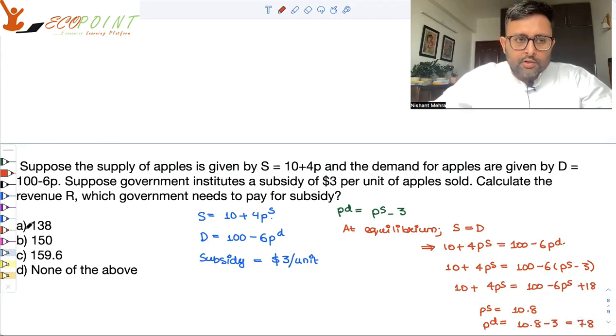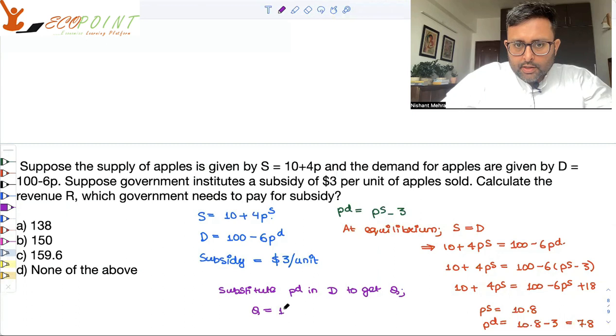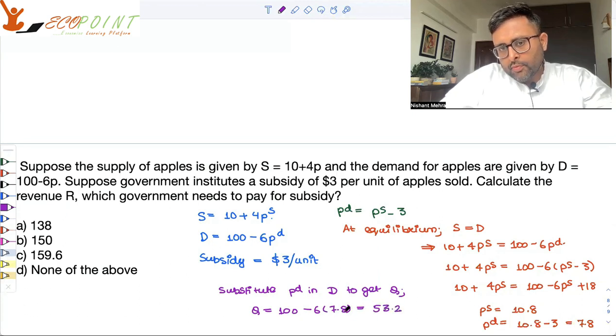Fair enough. So now what I can do is substitute this pd in demand to get quantity. So q is going to be 100 minus 6pd, which will come out to be 53.2. So quantity is this much. For this much quantity, the subsidy which is there is 3 per unit.